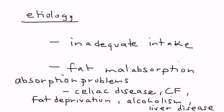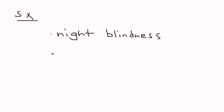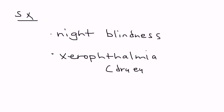On clinical vignettes, they'll describe a patient with one of these absorption problems as the reason they're developing the deficiency. In terms of symptoms, the most famous one is night blindness, because vitamin A is needed for that photoreceptor pigment in the retina. Without it, it's very difficult to see when there's less light. Another common finding is xerophthalmia — dry eyes due to failure of tear production.